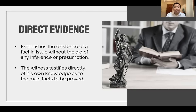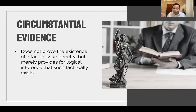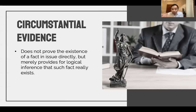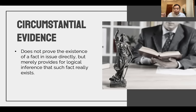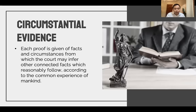What about circumstantial evidence? Circumstantial evidence does not prove the existence of a fact in issue directly, but merely provides a logical inference that such fact really exists. For example, if the witness did not see A stabbing B, but the witness saw A leaving the house, and upon entering found B covered in blood, then that testimony may not be direct. However, since the witness saw A leaving the scene of the crime and then found B lying on the ground with a bloodbath, there is a logical inference that A is the culprit of the crime of murder of B. That is circumstantial evidence — not direct, but it can provide a logical inference that such fact really exists.